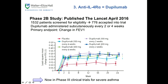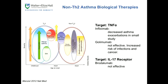Dupilumab then went into phase 2b studies, published late last year, and is now in phase 3 — it can't be approved until phase 3 is complete. The dose-finding study showed all doses looking roughly equivalent but all better than placebo. There are lots of new promising therapies for TH2-type asthma, though most patients respond well to steroids; these therapies are for those who don't.